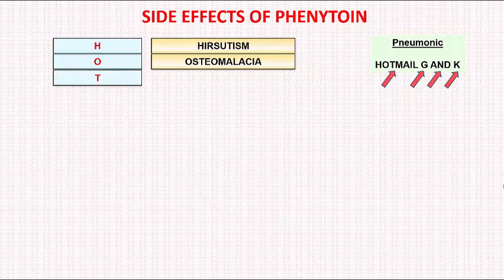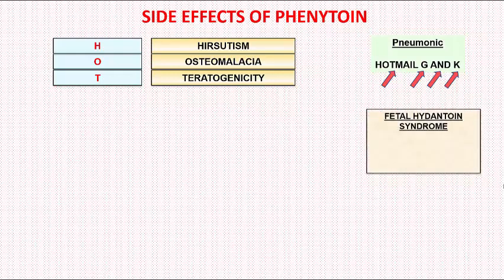Next is the letter T. T stands for teratogenicity. Phenytoin, if used during pregnancy, can lead to a group of defects called fetal hydantoin syndrome. Phenytoin use during pregnancy may result in defects in the fetus, which may manifest as cleft lip, cleft palate, microcephaly, and hypoplastic phalanges.